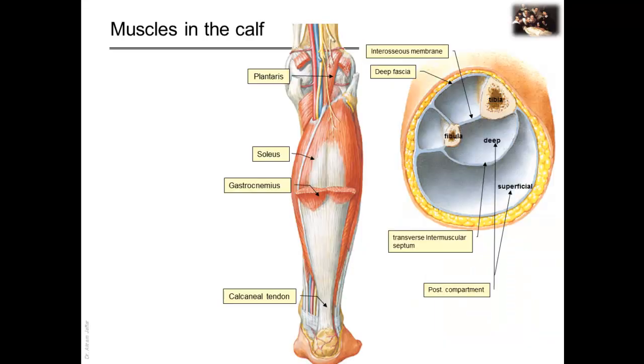In the calf, posterior compartment, the muscles are arranged in superficial and deep groups. The superficial group of muscles forms a powerful mass in the calf since they are required to maintain the upright posture and in walking. They include gastrocnemius, soleus, and a vestigial muscle called plantaris.